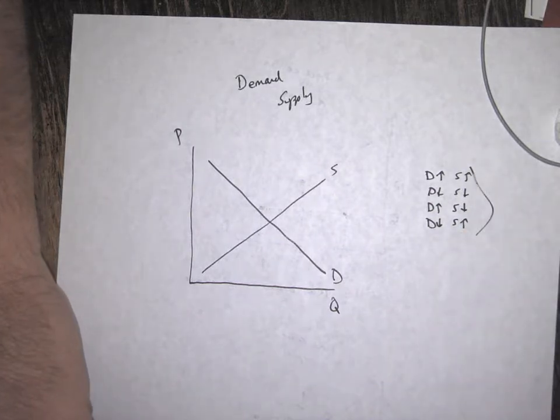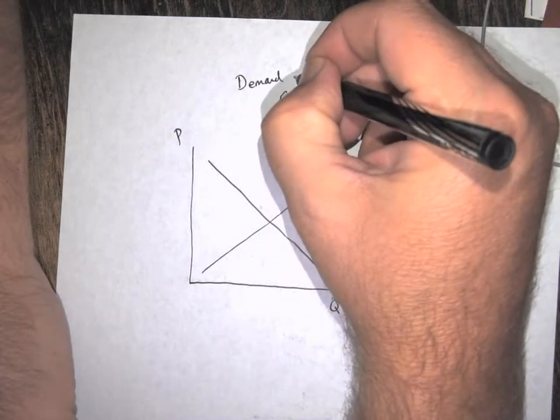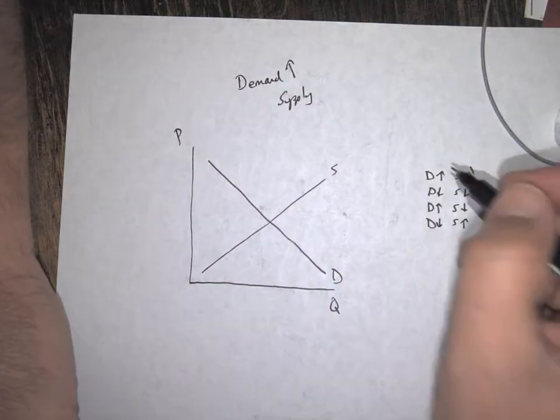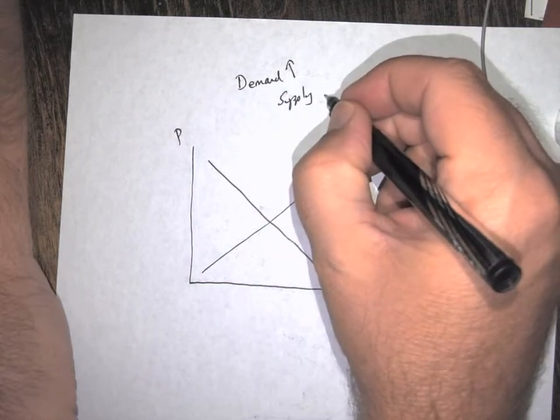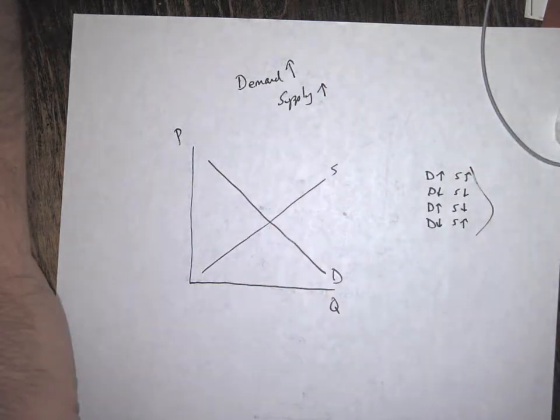Easiest thing to do is just draw it and let your labels tell you the story. So in this question it says you have simultaneous increase in demand and supply, and it's asking what is going to happen to